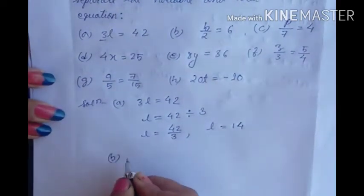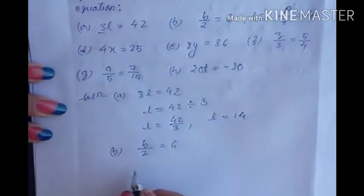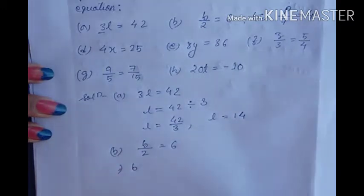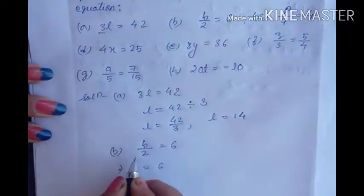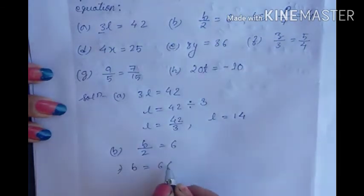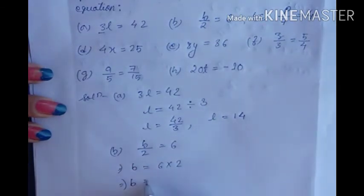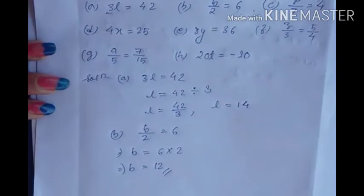For B: B upon 2 equals 6. We need only the variable on the left hand side. Here 2 is dividing with B. If we transpose 2 to the right hand side, divide becomes multiply. So B equals 6 into 2, which equals 12. The value of B is 12.